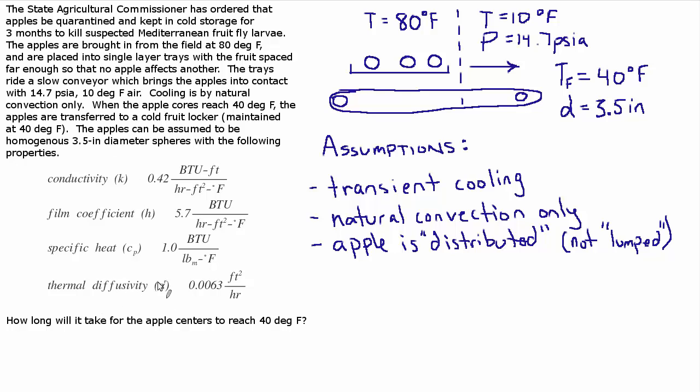You suppose you had like a hunk of metal and it would transmit the heat through it very quickly. Pretty much as soon as the outside part of it reached a certain temperature that heat would be transferred to the middle and the middle would reach the same temperature very soon after. But because it's an apple it doesn't have those same heat transfer properties so it actually matters that it's a sphere.